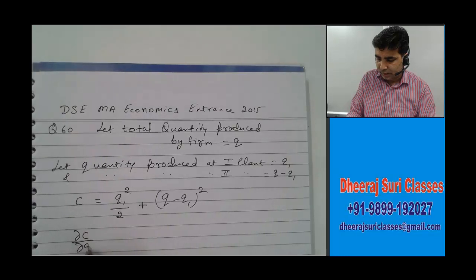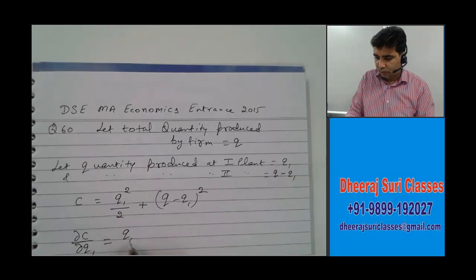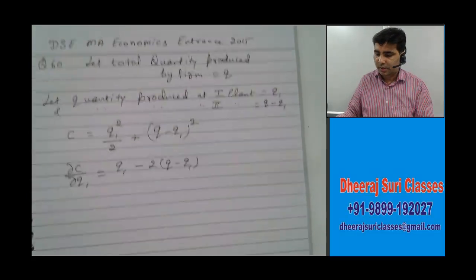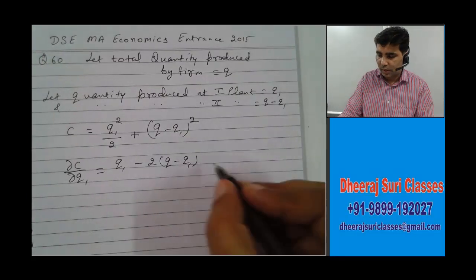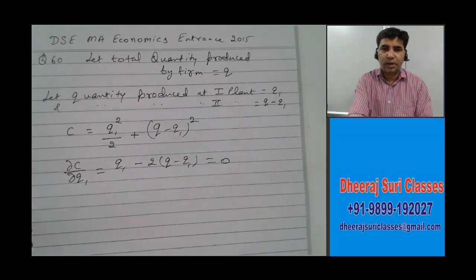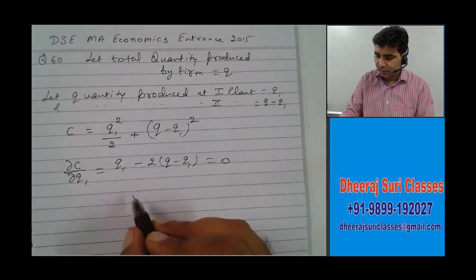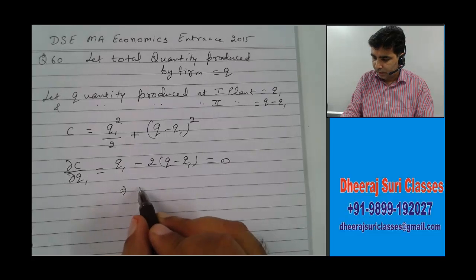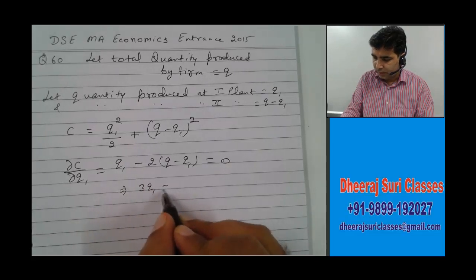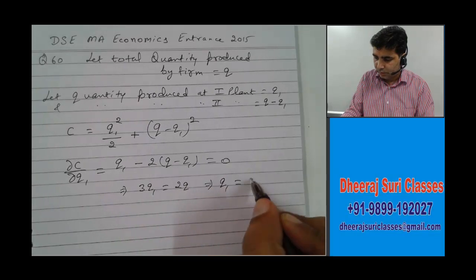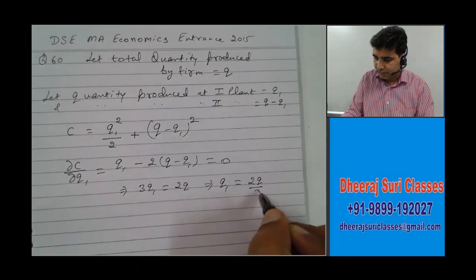We minimize the cost function by taking the derivative del C by del Q1 and setting it equal to zero — this is the first-order condition. When we simplify, we get 3Q1 equals 2Q, which means Q1 equals 2Q by 3.